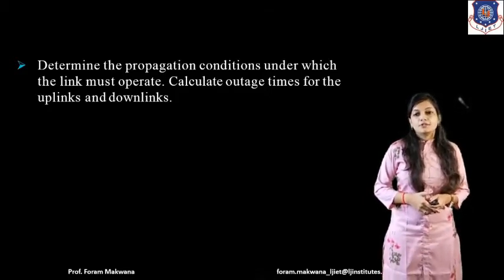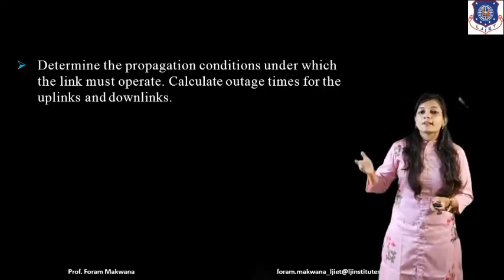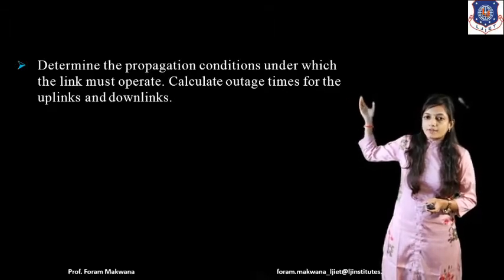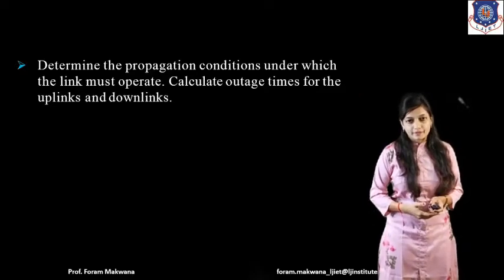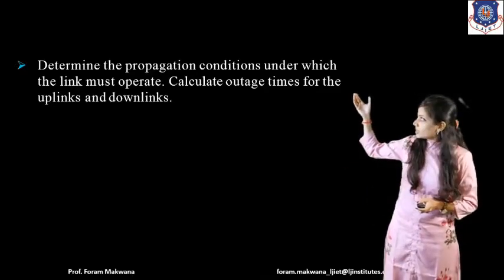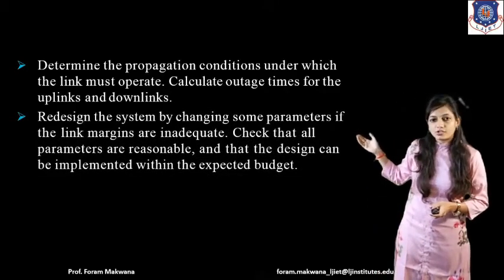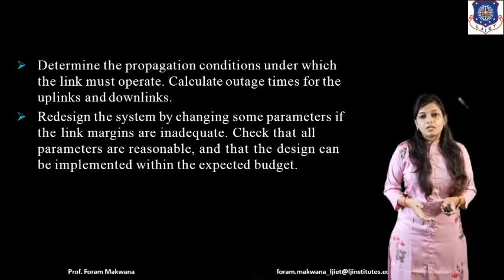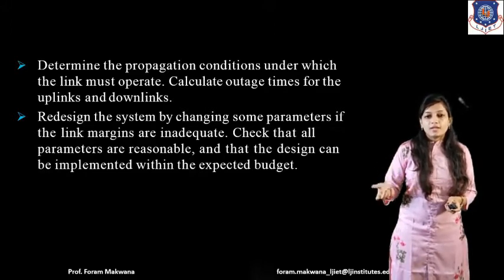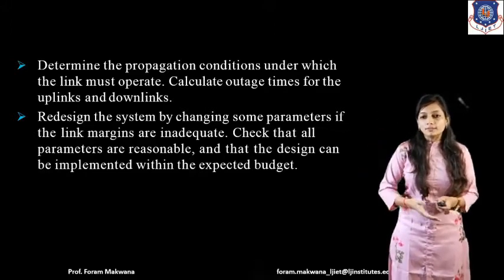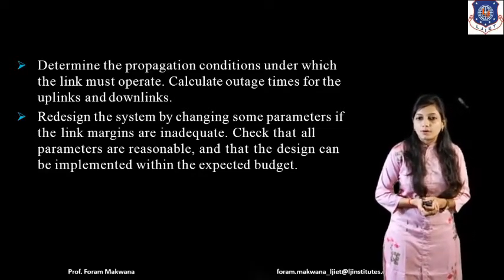We first need to consider the frequency band and how it affects carrier power, because we need to determine what propagation conditions the link must operate under. We calculate the outage time for both uplink and downlink and redesign the system by changing the soft parameters. This link budget allows us to recalculate all carrier power, received power, and noise power by simply adjusting parameters.